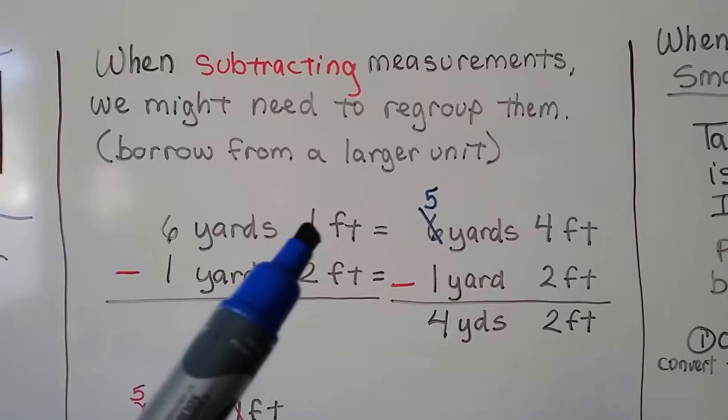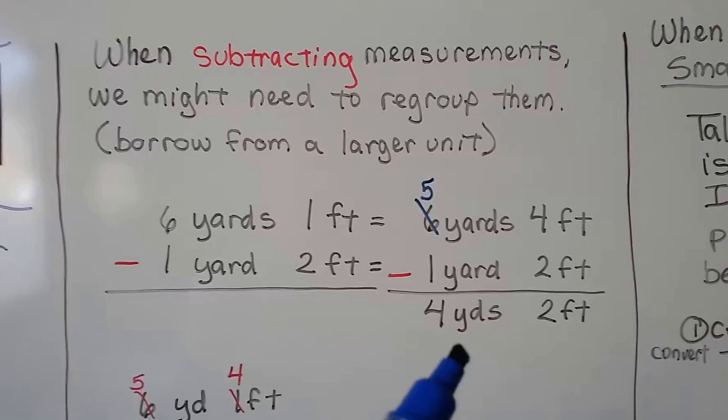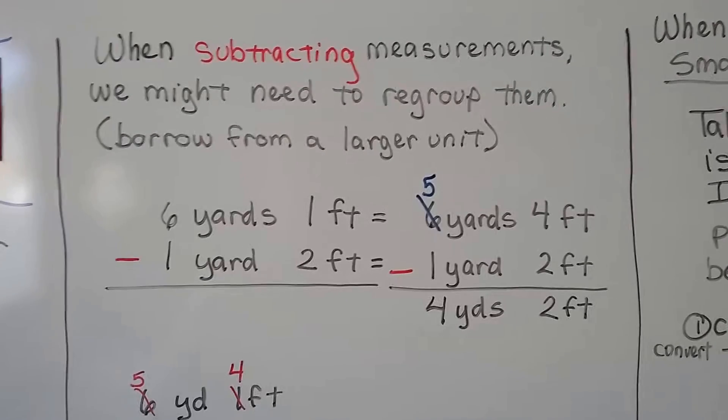so we need to borrow from the yards. This is going to become 5 yards and we're going to give, there's 3 feet in a yard, we're going to give 3 feet to that 1 foot. Now it's 4 feet. Now we can subtract and we get 4 yards and 2 feet.